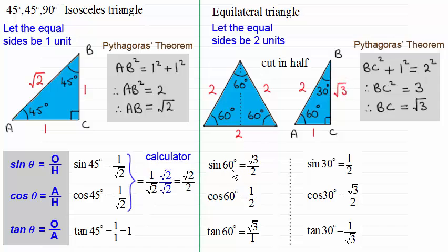Then we can see that, for instance, the sine of 60 degrees, which is opposite over hypotenuse, is going to be root three over two. Cosine of 60 degrees, adjacent over hypotenuse, one over two, a half. Tan of 60 degrees, opposite over adjacent, root three then over one.